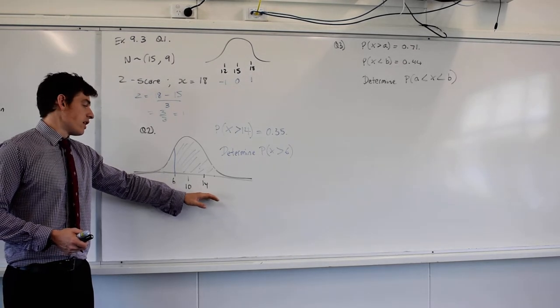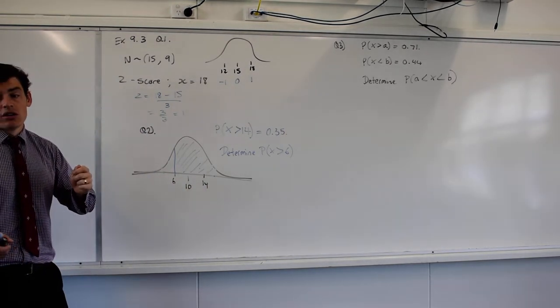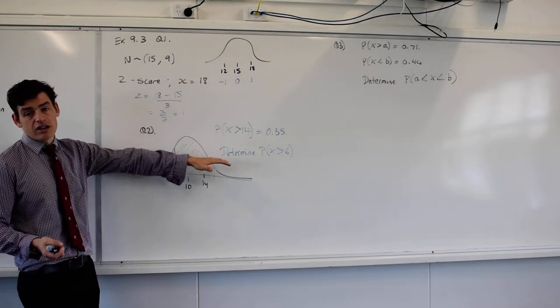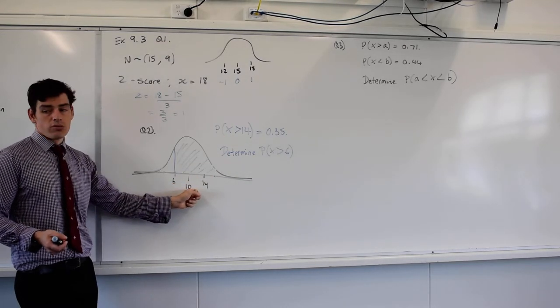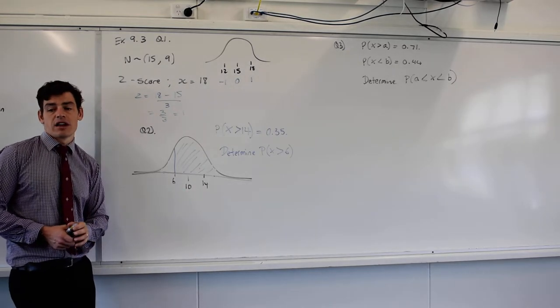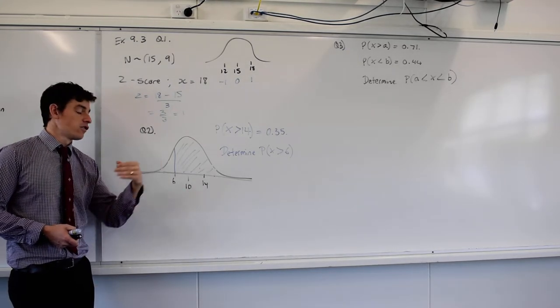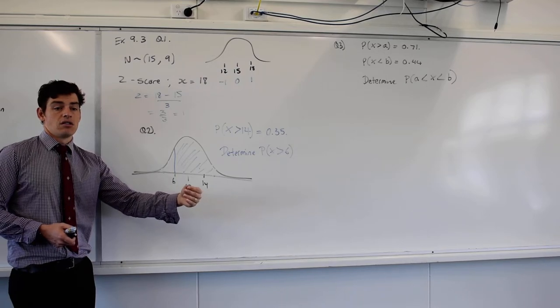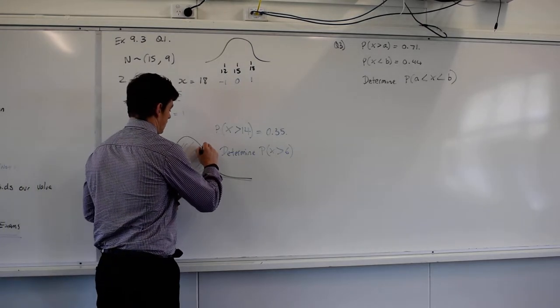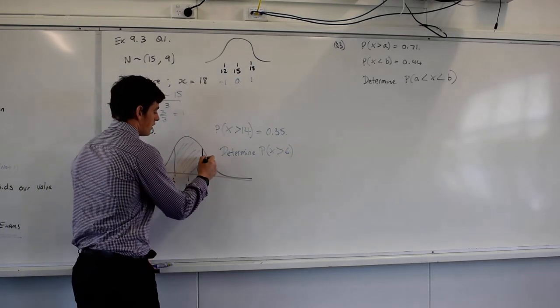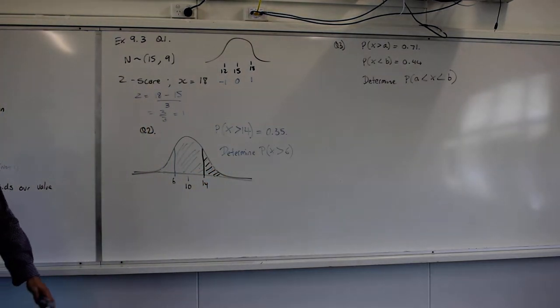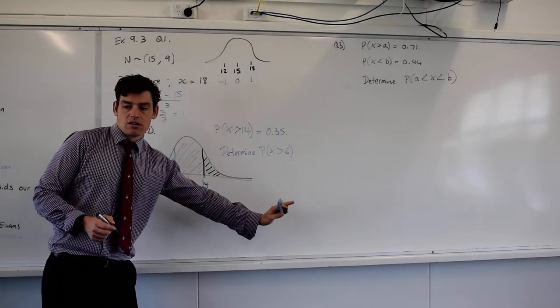You could, providing you know your mean is 10. Why is 14 and 6, why do we need to know the mean is 10 for that? What this tells us here, the probability we've been given, is this probability here. And we know that equals 0.35. So how is that going to help us find the probability that x is greater than 6?